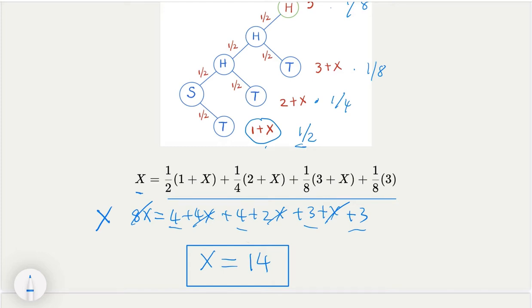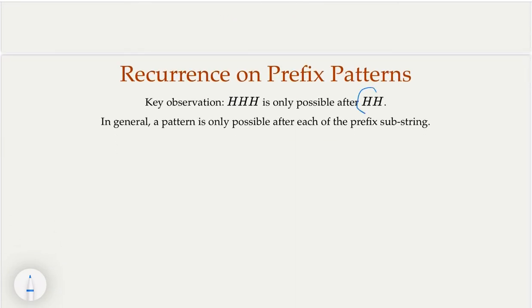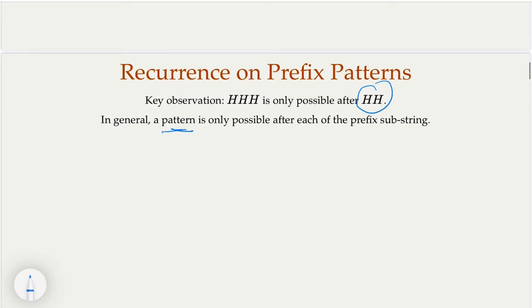On method number two, we're going to take a different approach. In order to have three H's in a row, you must first have two H's in a row — without that, you're going to start over. And in order to achieve two H's in a row, you must see the first H first. So in other words, in any pattern you would like to see, in order for the pattern to happen, you need all the prefix substrings to happen first.